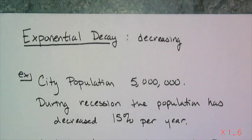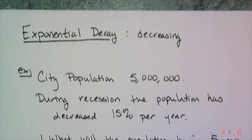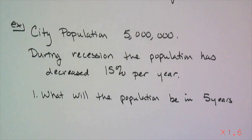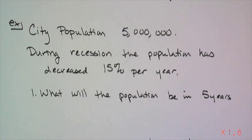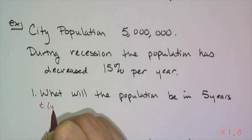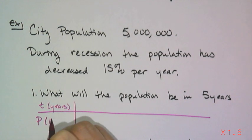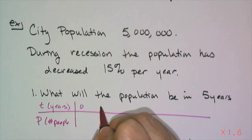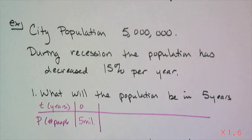Let's say we have a city population that starts off at five million people. During the recession, the population has decreased 15% per year. Now I want to know what the population will be in five years. I haven't given you an exponential decay equation because we can actually figure this out without an equation. So if I look at t is time in years, and p is the number of people, at zero years I have the five million, because the initial population was five million.